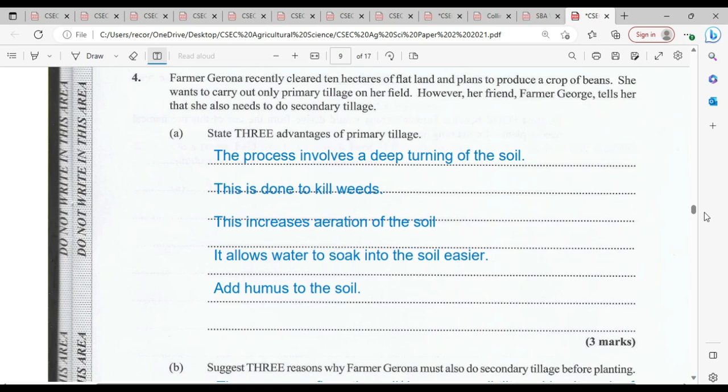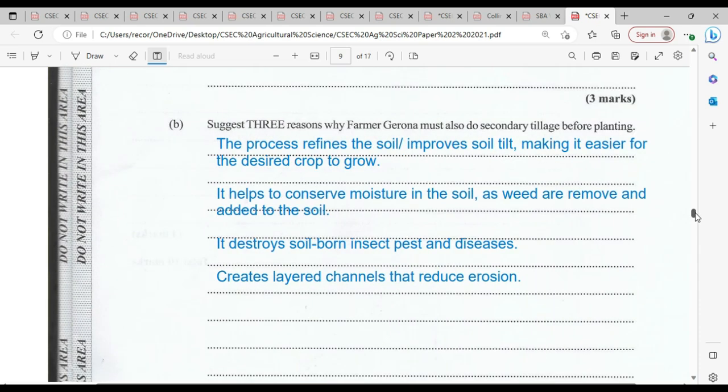Primary tillage involves the first or the initial tillage of the land. The process involves deep turning of the soil and it's going to kill the weeds that are on the land. It will also increase aeration of the soil. It also allows water to soak into the soil easier and it adds humus or organic remains to the soil. All this takes place as a result.